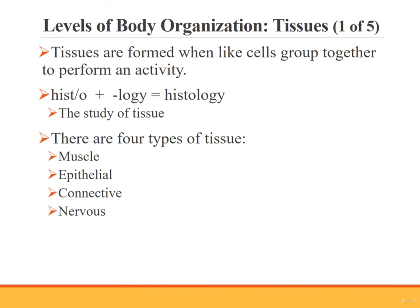Tissues are the next level of organization. Tissues are formed when like cells are grouped together and function together to perform an activity. The combining form histo means tissue. The combination of histo with the suffix logy gives us the medical term histology, which means the study of tissue. There are four types of tissue in the body: muscle tissue, epithelial tissue, connective tissue, and nervous tissue.